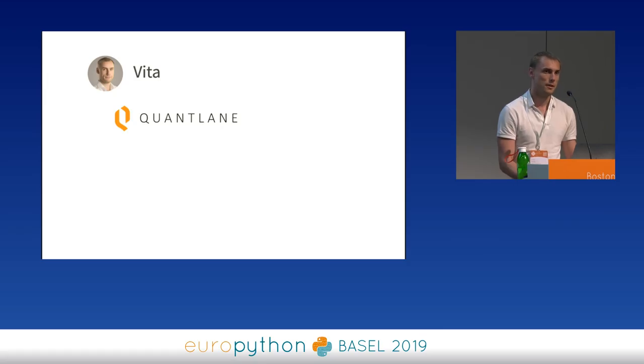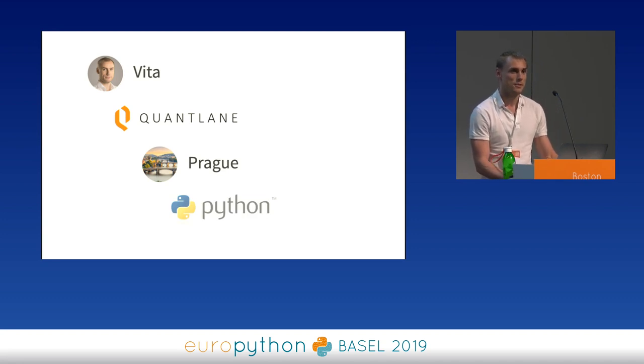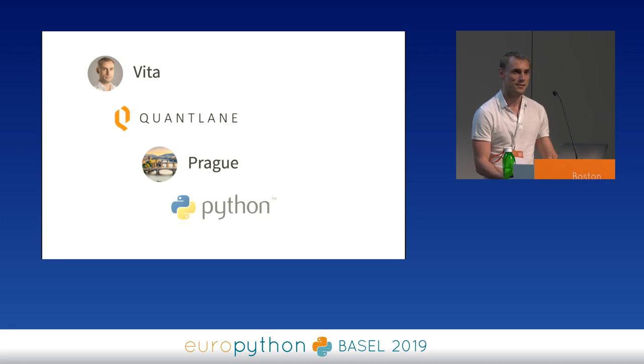My name is Vita. I'm a software engineer and now a co-founder of a company called QuantLane. We started five years ago and what we do is we trade stocks mostly in Europe, automatically and semi-automatically. We are based in Prague and everything we do on the back end is in Python 3.7. We also use a lot of asyncio, and we were very early to start using type annotations and MyPy.